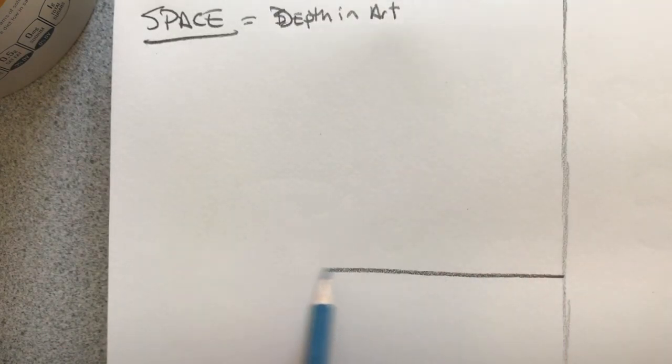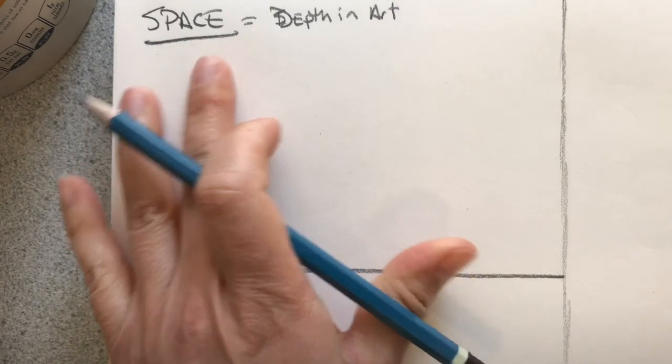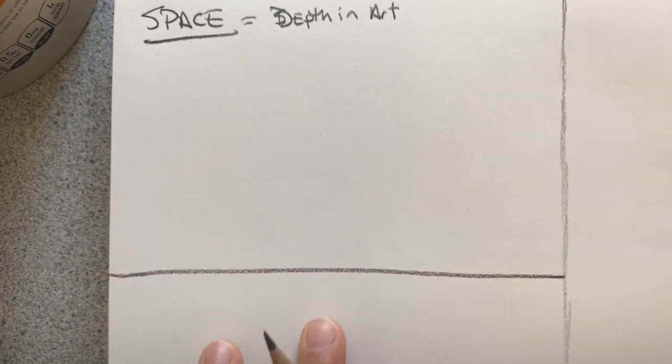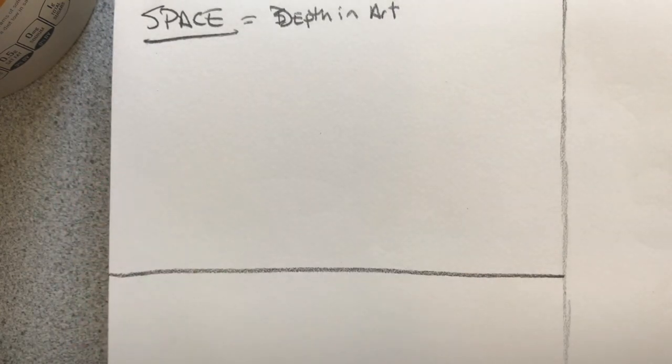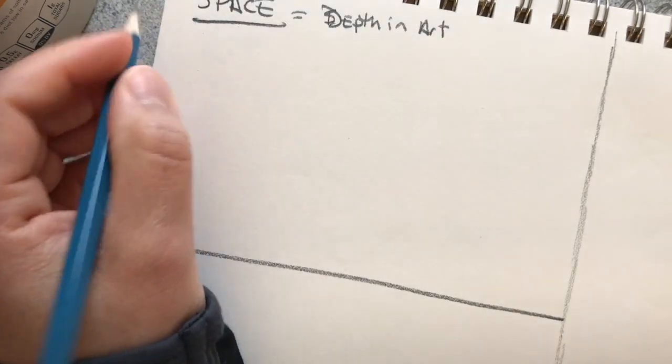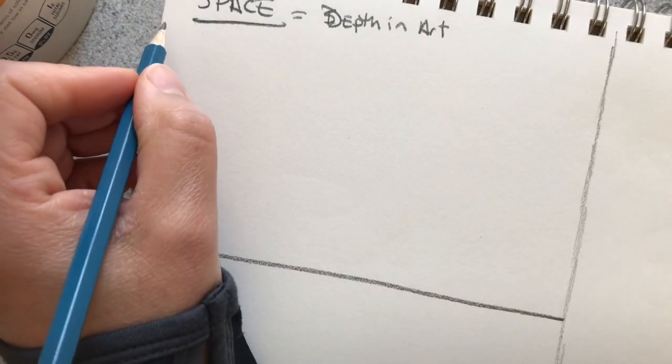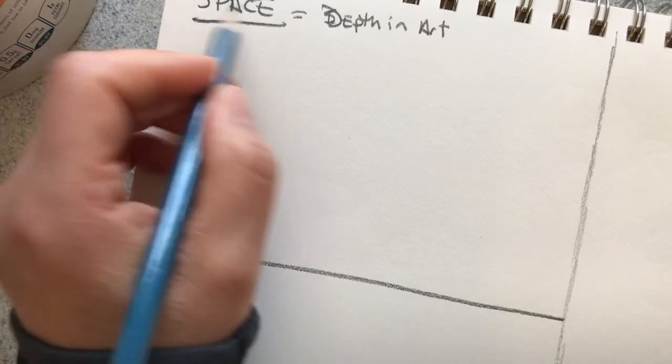What we're gonna do first is take our page and divide it in half, so we'll have some vocabulary words up at the top and then we'll do a little doodle at the bottom. Let's get the vocab stuff taken care of first. We have five vocab words when we talk about space.